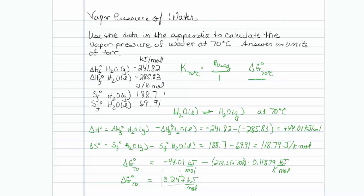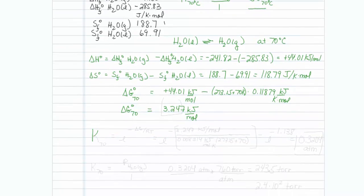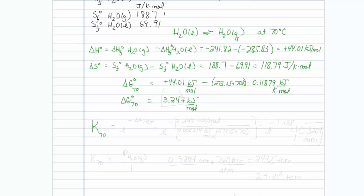Now I need to find out my equilibrium constant. So I will find out the equilibrium constant at 70 is equal to e to the minus delta G over RT.